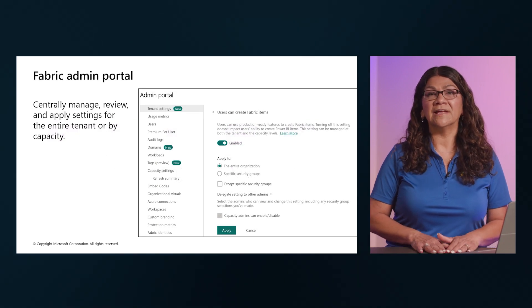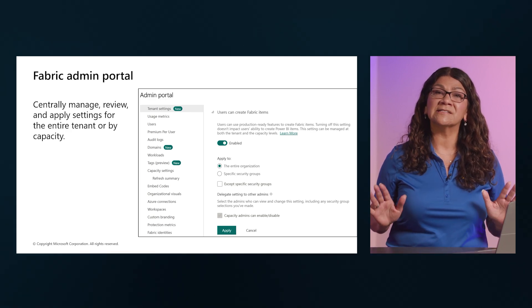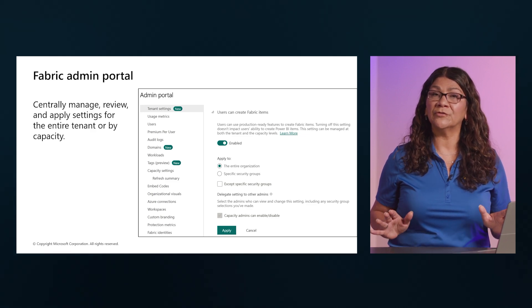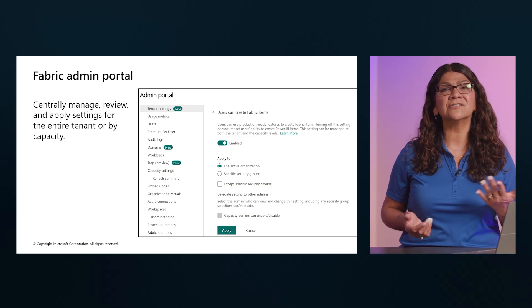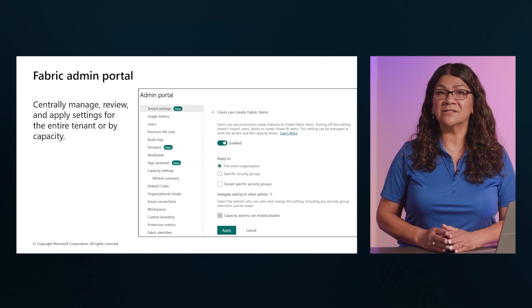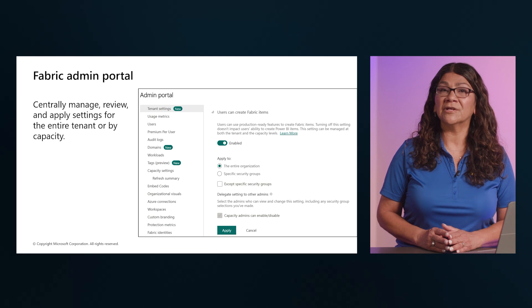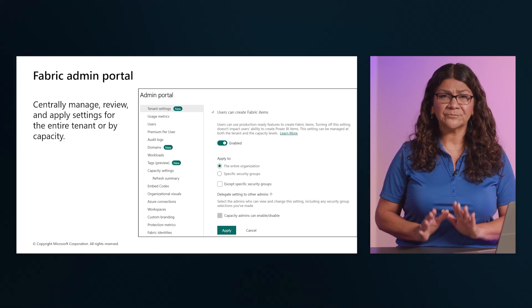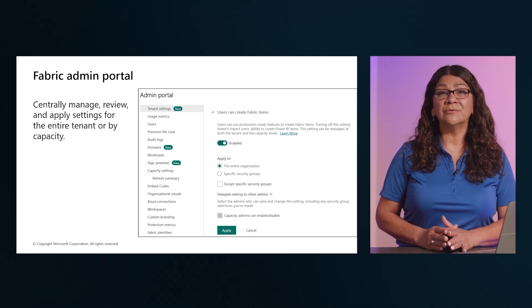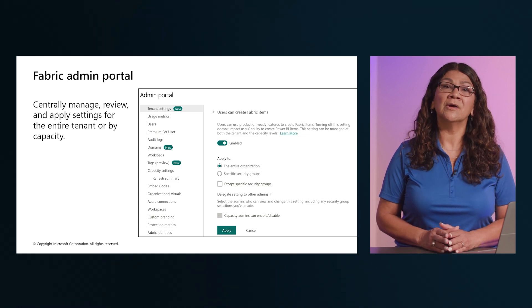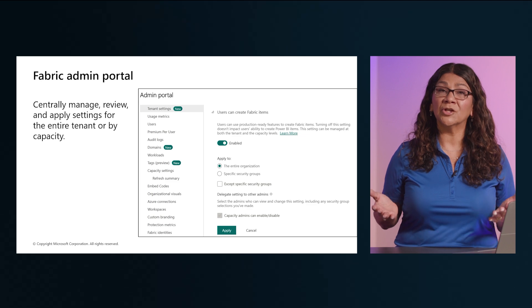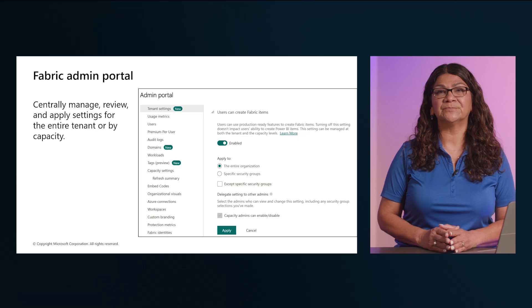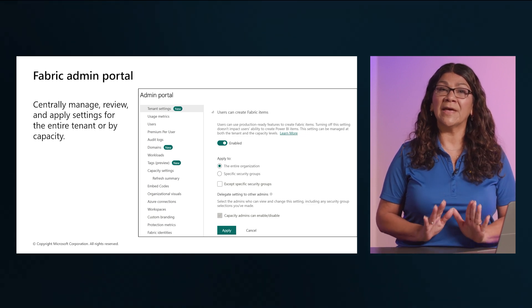The Microsoft Fabric admin portal is a web-based portal where you can manage all aspects of the platform. In the admin portal, you can centrally manage, review, and apply settings for the entire tenant or by capacity. You can also manage users, admins, groups, access, audit logs, and monitor usage and performance. Access to the admin portal requires a Fabric license, and the portal is accessible to admins with roles such as Global Administrator, Power Platform Administrator, and Fabric Administrator.